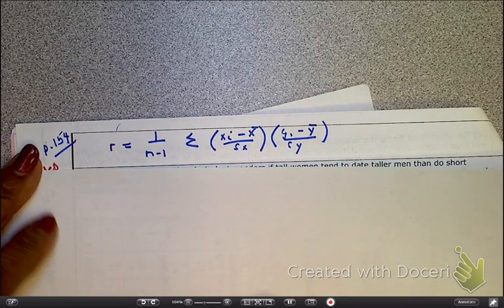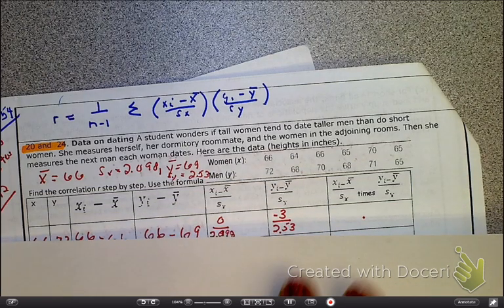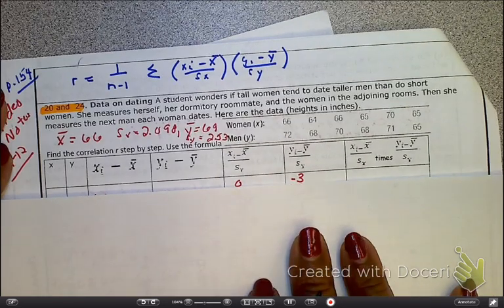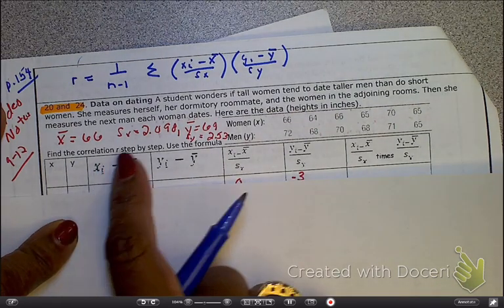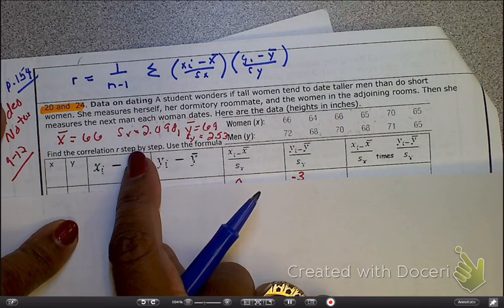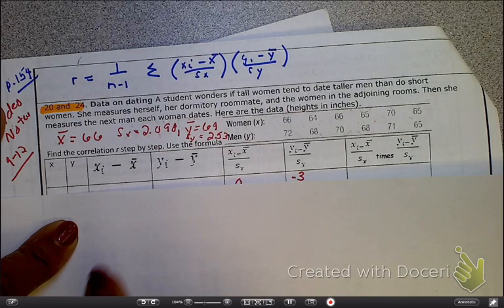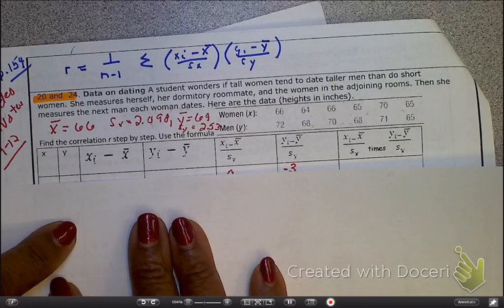What we've done here, what they're doing on this particular problem, is that they are breaking down all of, they're breaking down the formula. So, you notice I've already put down what my x bar is, my standard deviation of x, and my standard deviation of y. But yes, I'm still putting this in my calculator, but this time I'm using something different. I'm using second bars.